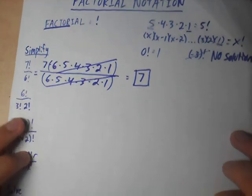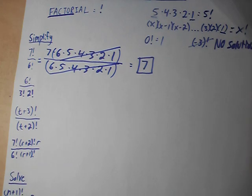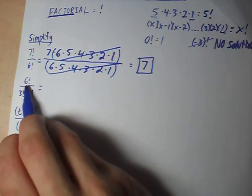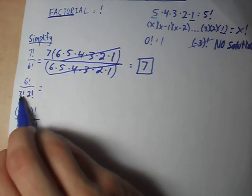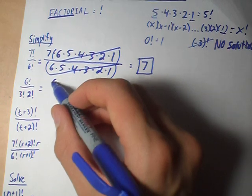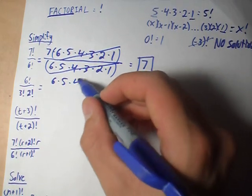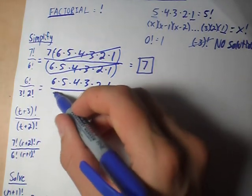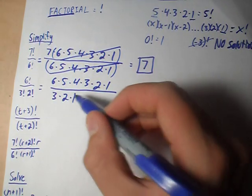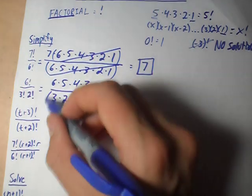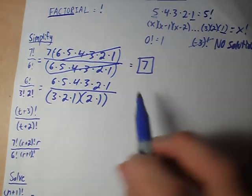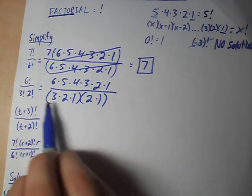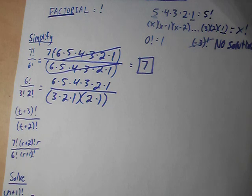Here is another factorial question — again, we're simplifying. We've got 6 factorial on the numerator, and in the denominator we've got 3 factorial times 2 factorial. Let's expand this again — you don't have to expand the factorial for every question, but just for this tutorial it is a bit handy for explanation. So we've got 6 factorial on the top expanded, and 3 factorial times 2 factorial expanded as well.